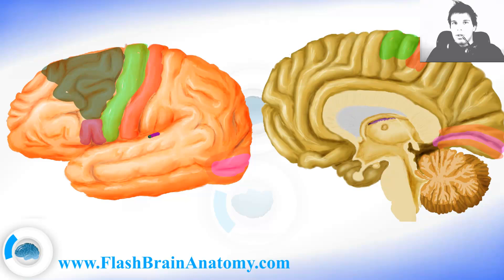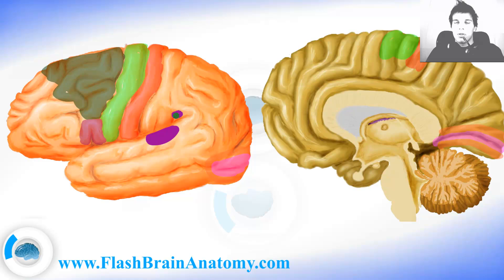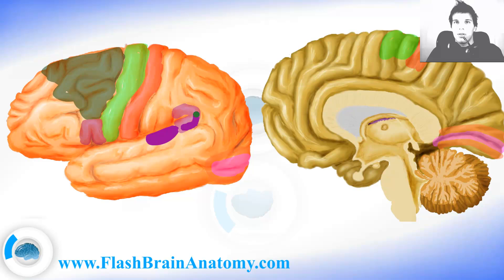This part of the cortex is important for receiving the auditory signal — not for perception of the signal, but just receiving it. This gyrus here is called the supramarginal gyrus and is important for understanding speech. If there is a stroke or this part of the brain is damaged, the patient will be able to receive the signal but won't be able to understand what is being told to him.